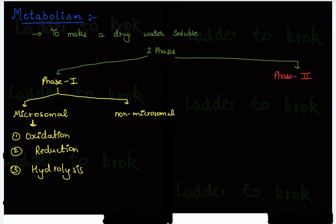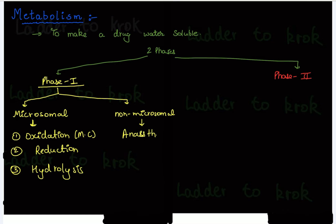The most common phase one reaction is oxidation. For non-microsomal enzymes there is an example like anesthesia. Phase one reactions are catabolic reactions. The purpose of phase one is to expose the functional group on the drug — every drug has some functional group, and in phase one we expose that functional group.